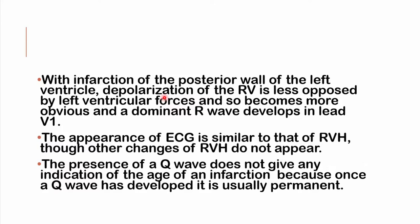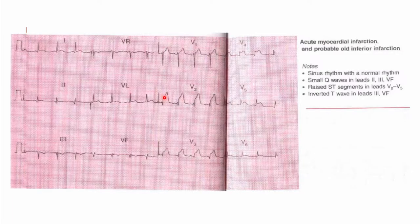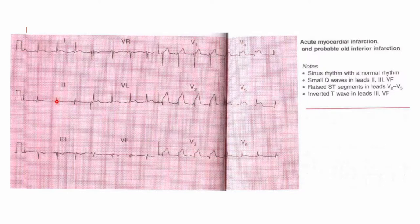The presence of a Q wave does not indicate the age of the infarct — generally, once someone has had an infarct, the Q waves will remain permanently. Here is an ECG of a patient with an acute myocardial infarction, probably an old inferior infarct. The patient has normal sinus rhythm. Pathological Q waves are present in leads 3, 2, and AVF. There is ST segment elevation in leads V2, V3, V4, and V5, and T wave inversion in lead 3 and lead AVF.